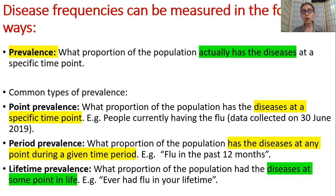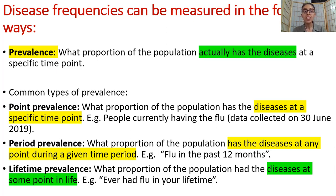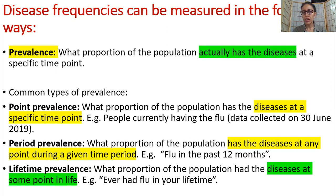Prevalence and incidence, and everything else we're covering today, involve relatively easier calculations. The more advanced ones, like calculating age-standardized rates, are not assessable items because these are advanced-level epidemiological knowledge. It is not appropriate to ask you to do those calculations in a unit gearing you to understand the basics of epidemiology. So don't worry. Now let me give you an example of prevalence.